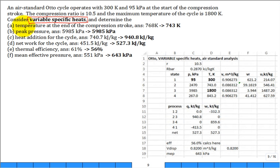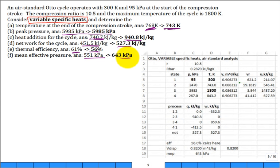Now the problem is changed to use variable specific heats instead of constant. You will get different answers. The value for T2 happens to be the same, but the heat addition, net work, and thermal efficiency are all different and don't agree to two significant figures. Students always ask which is the better answer. Since the Otto cycle is already an abstraction, both are approximations, but variable specific heats gives the more accurate result for the true Otto cycle.